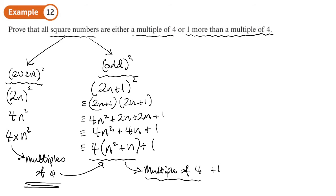We've proved all square numbers, and square numbers are either even numbers squared or odd numbers squared, are either multiples of 4 - that's when you square an even number - or one more than a multiple of 4. That's what happens when you square an odd number.